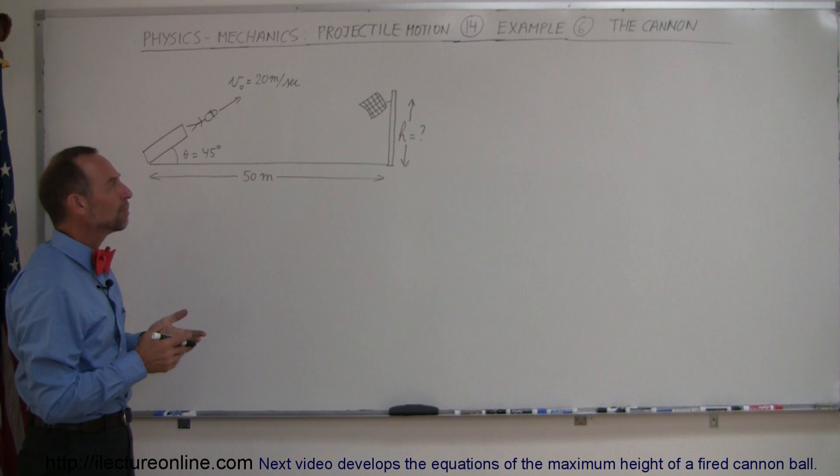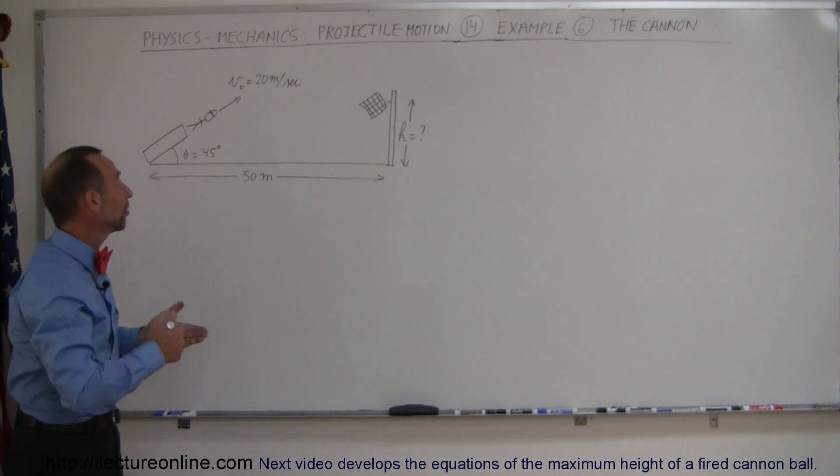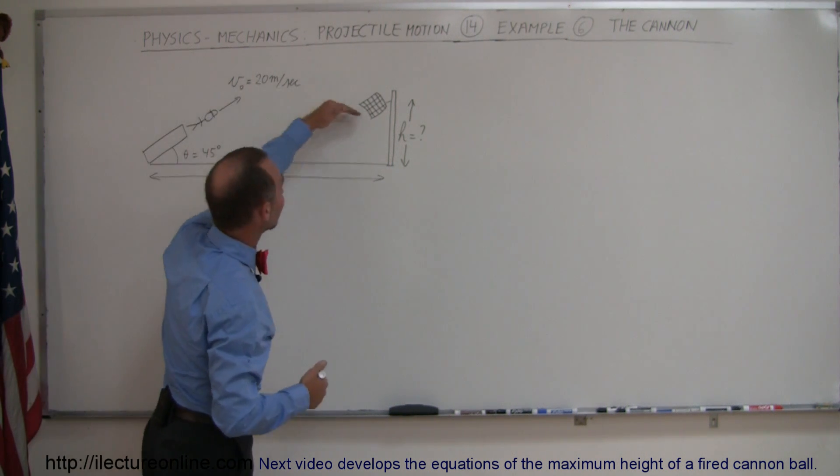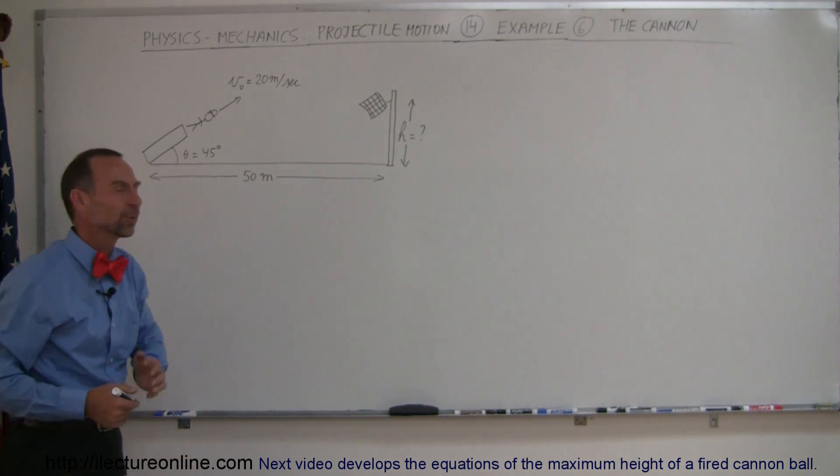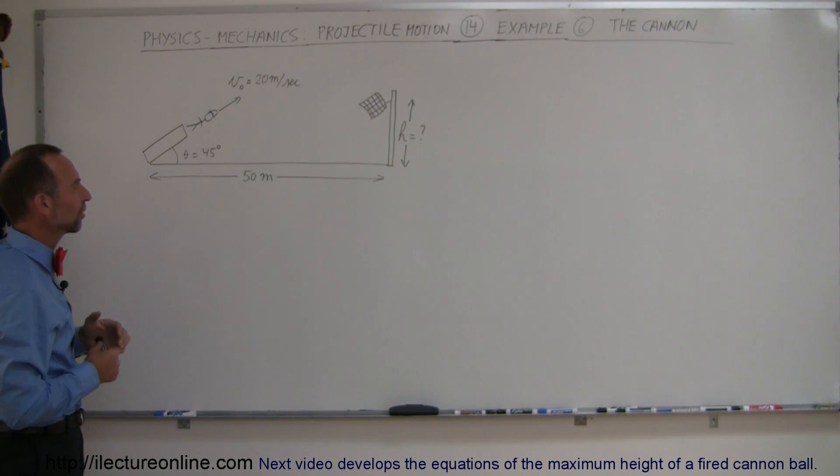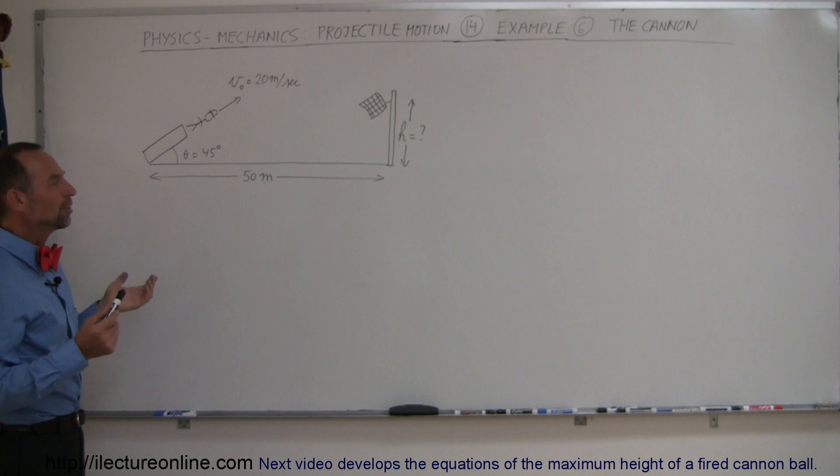And the question then would be, how high should this net be positioned so that the person will actually land in the net instead of somewhere else where there would be more severe consequences? So how do you handle this?